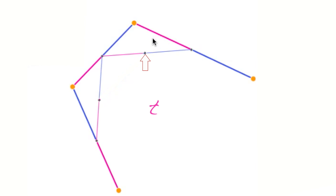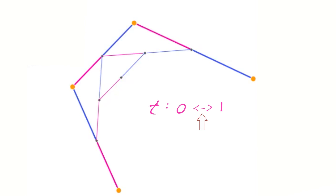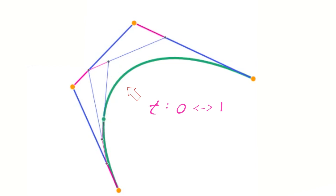As before, we find a point on each of the new segments using linear interpolation and the same t value. Now we have a two-point polygon, or a line. We find a point on our line using linear interpolation one more time. As we vary the parameter t, this final point traces out our smooth curve.